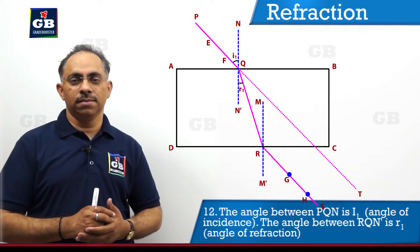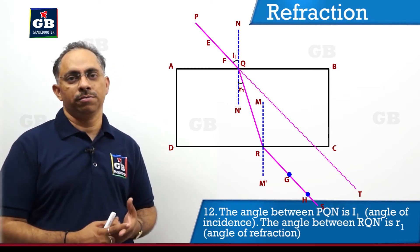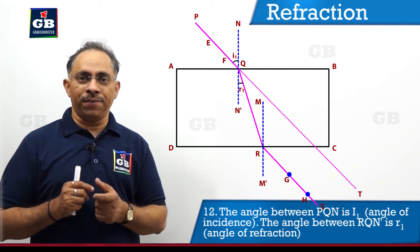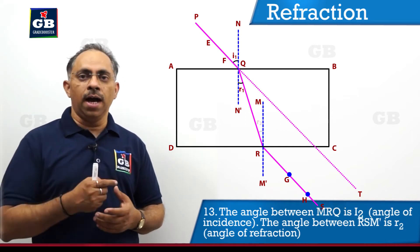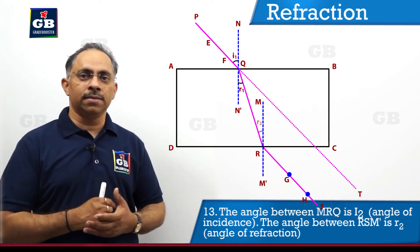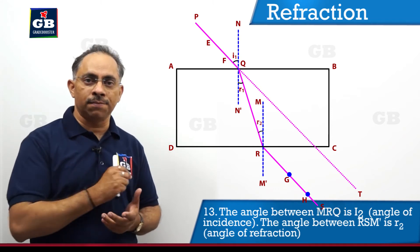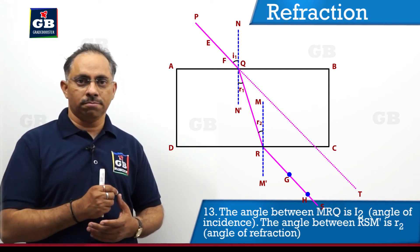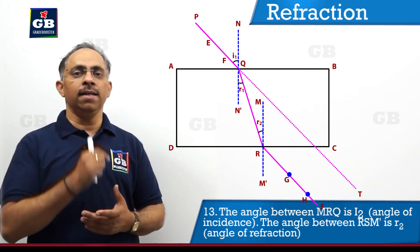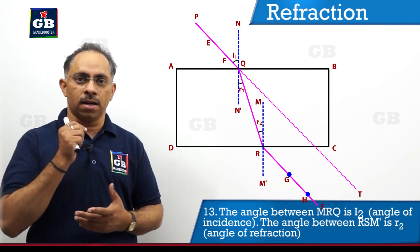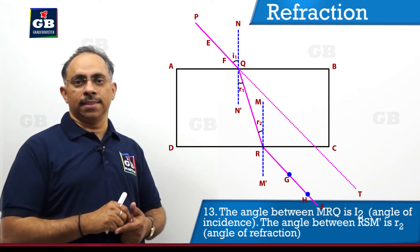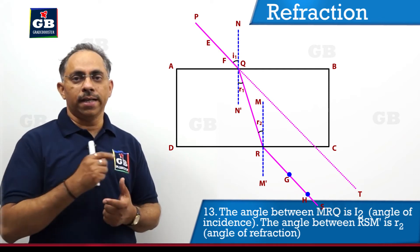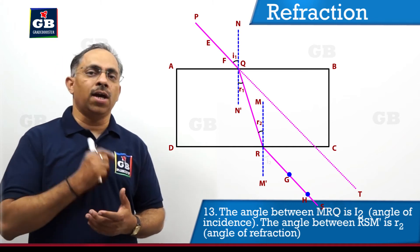Now labeling the angles: I1 is the angle of incidence on face AB at point Q. The angle between NN' and QR inside the glass is marked R1 — the angle of refraction inside the glass slab. At point R, the angle between MM' and QR (angle QRM') is marked R2, the angle of incidence inside the glass at surface CD. The angle between MR and S — angle MRS — is marked I2, called the angle of emergence.